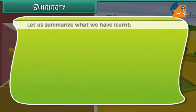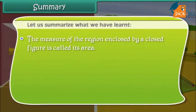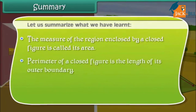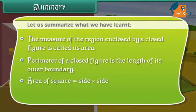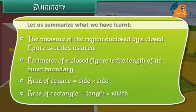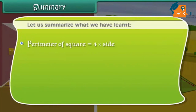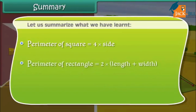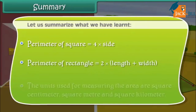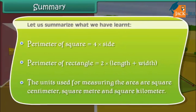Let us summarize what we have learned. The measure of the region enclosed by a closed figure is called its area. Perimeter of a closed figure is the length of its outer boundary. Area of a square is equal to side multiplied by side. Area of a rectangle is equal to length multiplied by width. Perimeter of a square is equal to 4 multiplied by side. Perimeter of a rectangle is equal to 2 multiplied by the sum of length plus width. The units used for measuring area are square centimeter, square meter, and square kilometer.